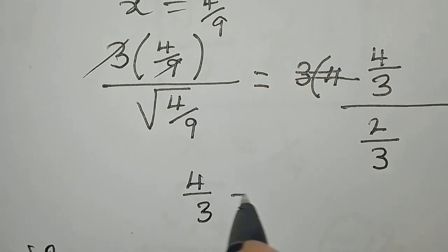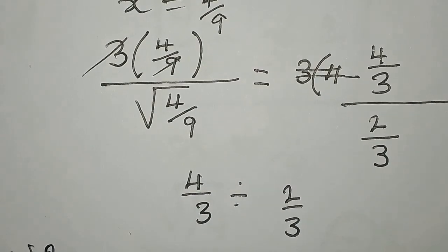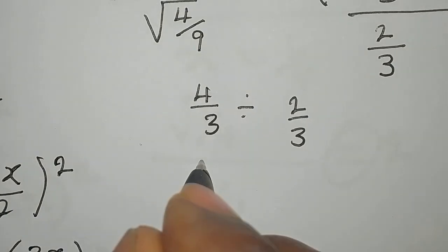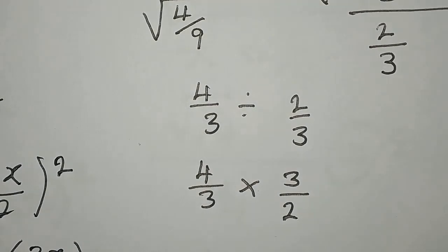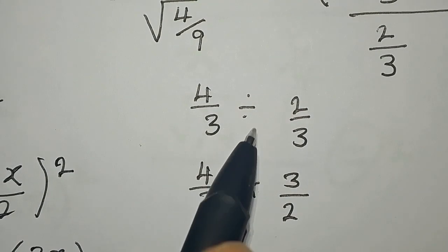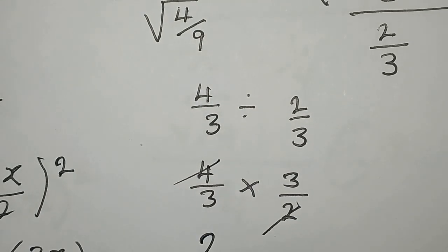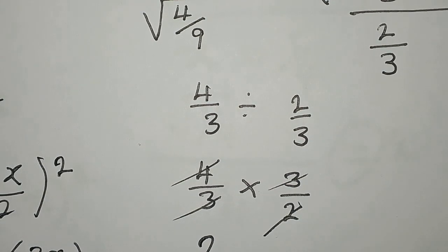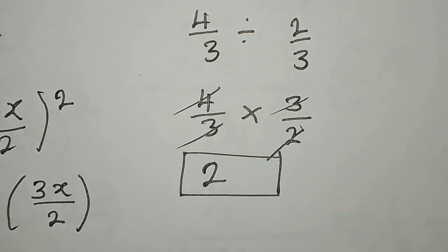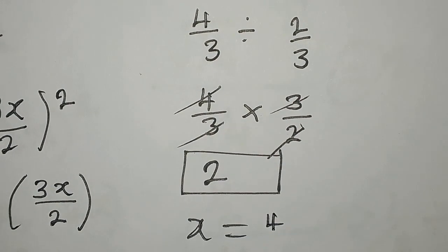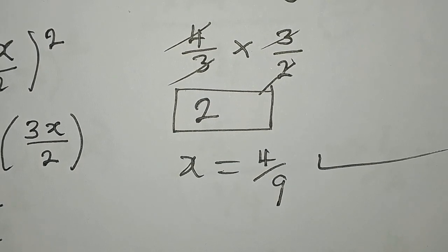So we have 4 over 3 divided by 2 over 3. Dividing by a fraction means multiplying by its reciprocal, so 4 over 3 multiplied by 3 over 2: the 3s cancel, leaving 4 over 2, which equals 2. This confirms that x equals 4 over 9 satisfies the equation. Thank you for watching.